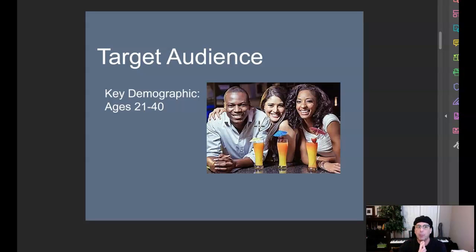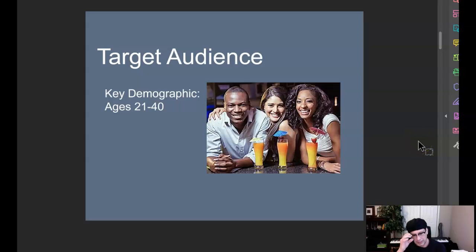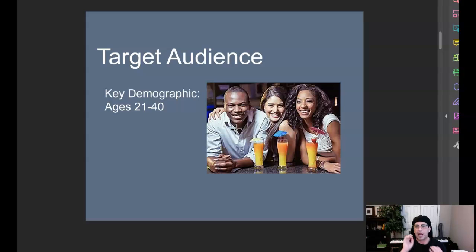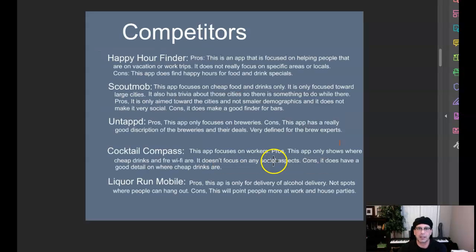I'm going to point you back to that treehouse example from our class. I think it's really important that you start taking a look at some of the examples. I've left multiple examples for all of our assignments so far, including many examples of the different steps of the process book in our end-of-course announcements. This would not do well as a target audience page because you're just saying age is 21 to 40. You really have to isolate and define that target audience.